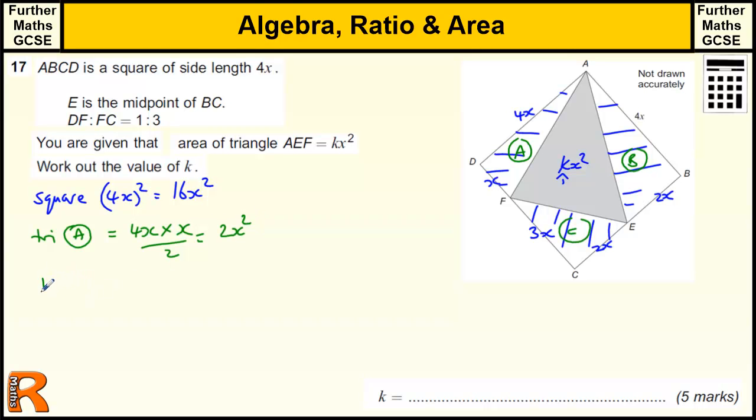Triangle B is going to be 4x times 2x all over 2, which is going to be 8x squared over 2, which is 4x squared.